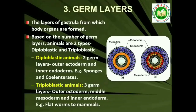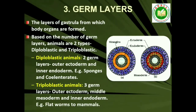3. Diploblastic and Triploblastic Organization: Animals in which the cells are arranged in two embryonic layers, an external ectoderm and an internal endoderm, are called diploblastic animals, for example, coelenterates. An undifferentiated layer, mesoglea, is present in between the ectoderm and the endoderm. Those animals in which the developing embryo has a third germinal layer, mesoderm, in between the ectoderm and endoderm, are called triploblastic animals, from Platyhelminthes to chordates.